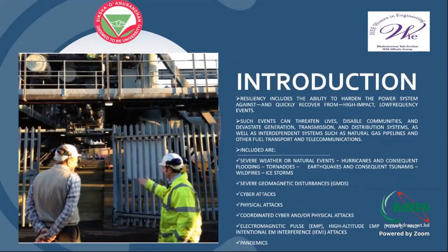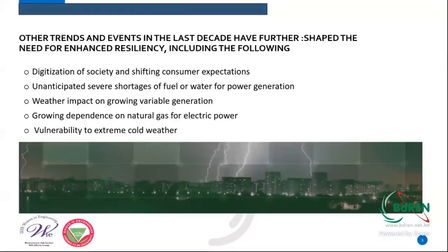Natural events like hurricanes, flooding, tornadoes, and severe geomagnetic disturbances (GMDs) such as solar storms have demonstrated their ability to disrupt the power grid. In 1989, a major GMD led to the collapse of the Hydro-Québec transmission energy interconnection, leaving six million people without power for nine hours.